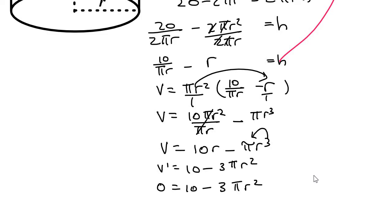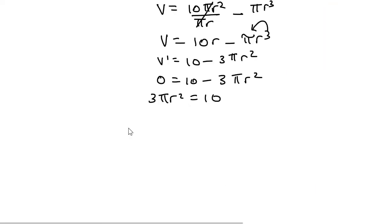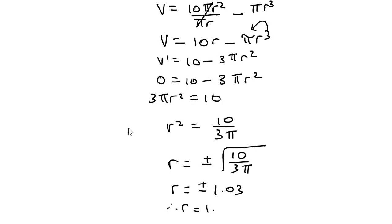Okay, what I would then do is I'll take the 3πr² over to the other side. You can then divide by 3, so you can get r² equal to 10 over 3π. You then take the square root, and so r is going to be technically plus minus the square root of 10 over 3π, and that's going to mean that r is positive or negative 1.03, but r can't be a negative. You can't have a negative radius, therefore r is going to be 1.03.